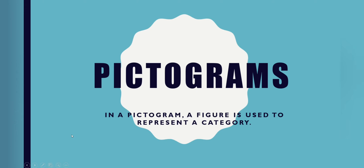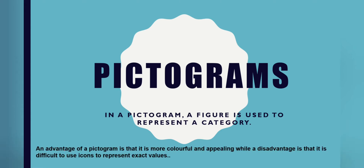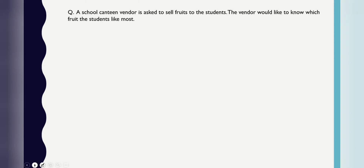Pictograms. In a pictogram, a figure is used to represent a category. A pictogram is a chart that uses pictures to represent data. An advantage of a pictogram is that it's more colorful and appealing — it's attractive. A disadvantage is that it is difficult to use icons to represent exact values. But the advantage is that it's very colorful and easy to see.